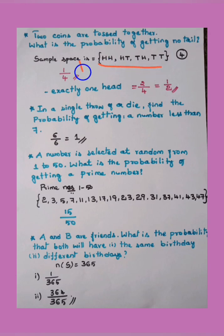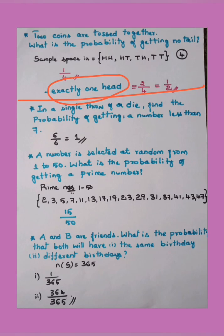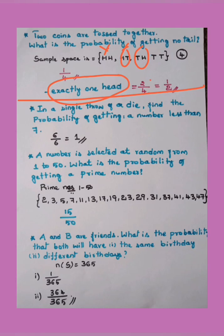Same question asked differently: if two coins are tossed together, what is the probability of getting exactly one head? Exactly one head means only one head should appear. From the sample space, HT and TH each have exactly one head — so two outcomes out of four. Two by four simplifies to one by two.